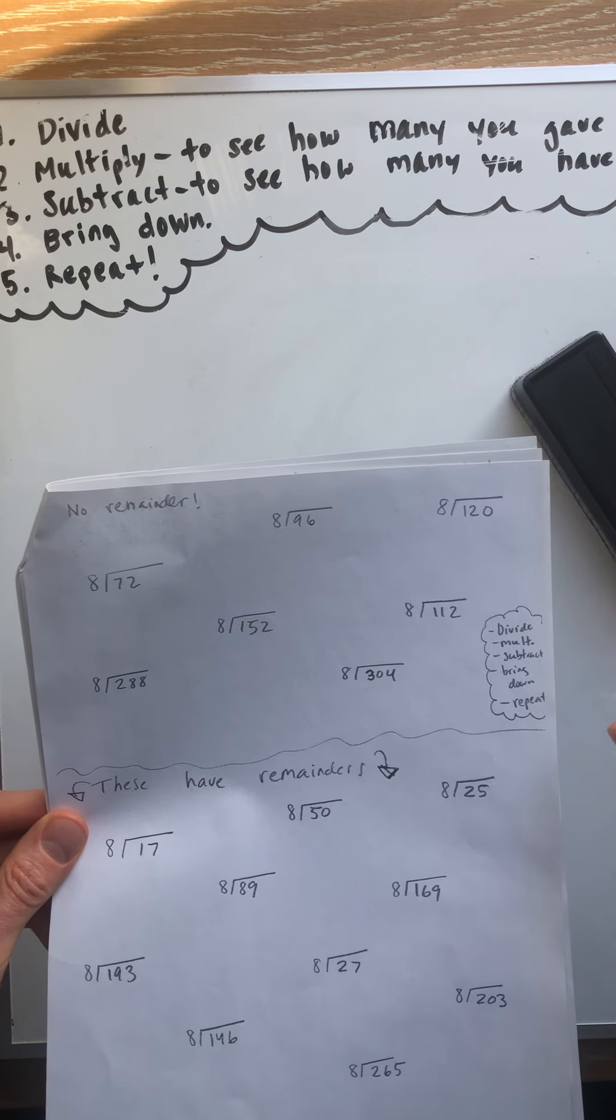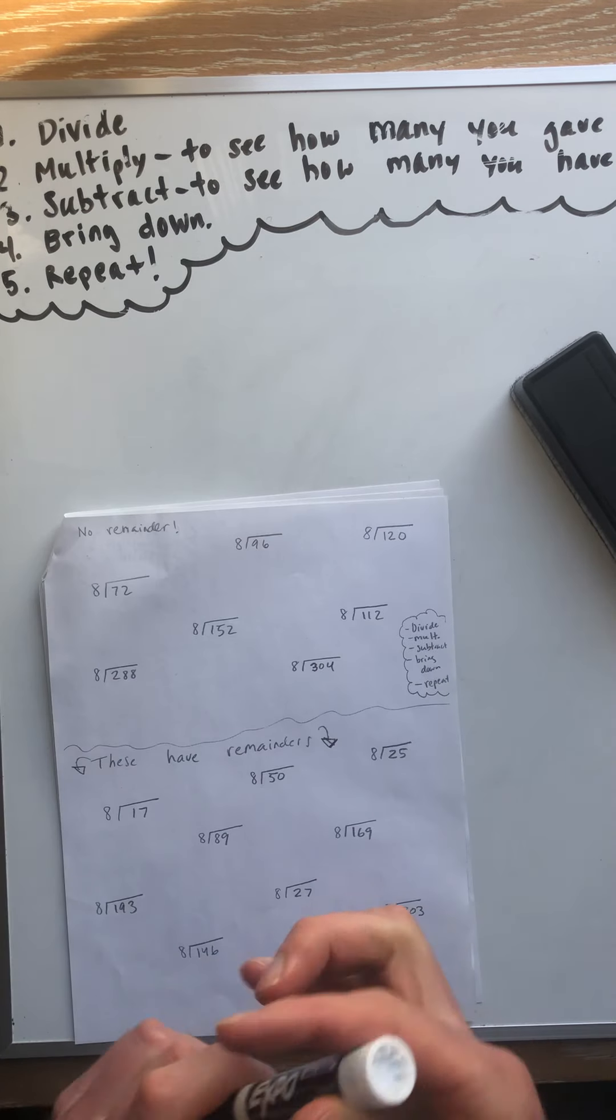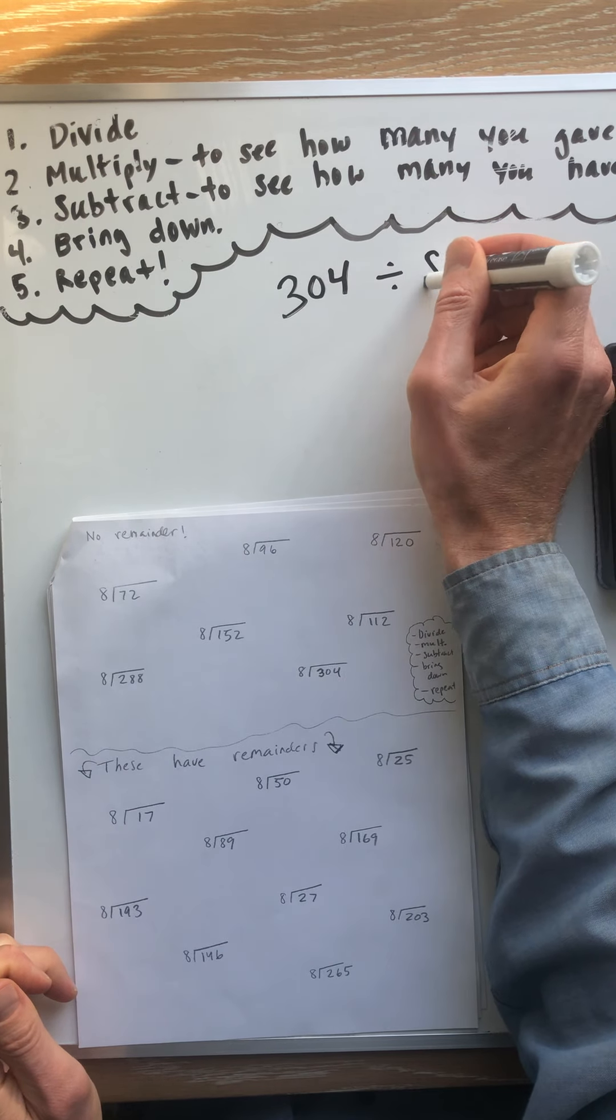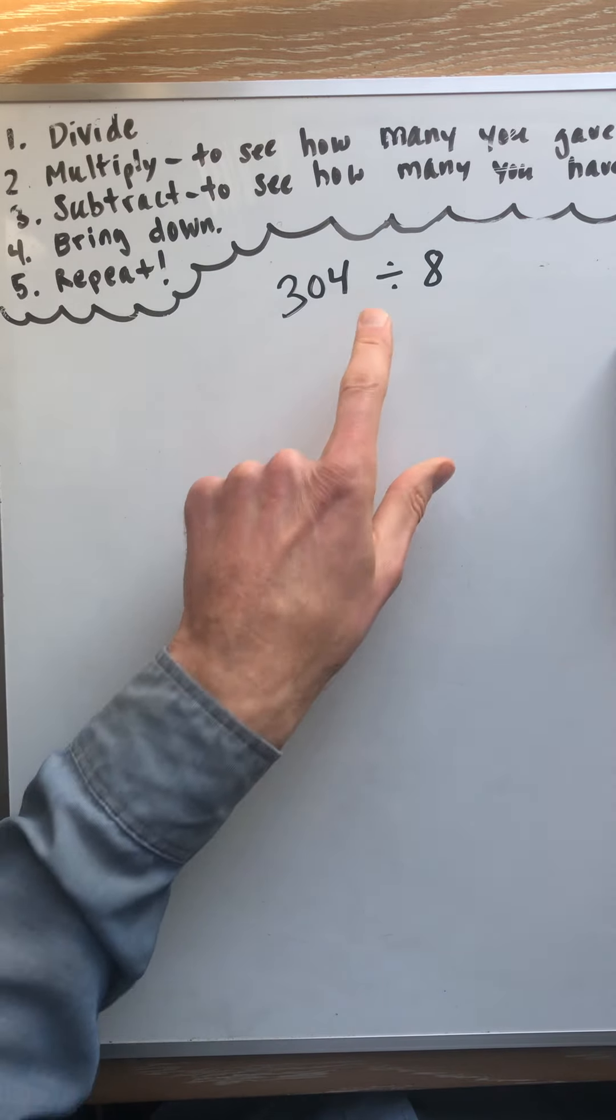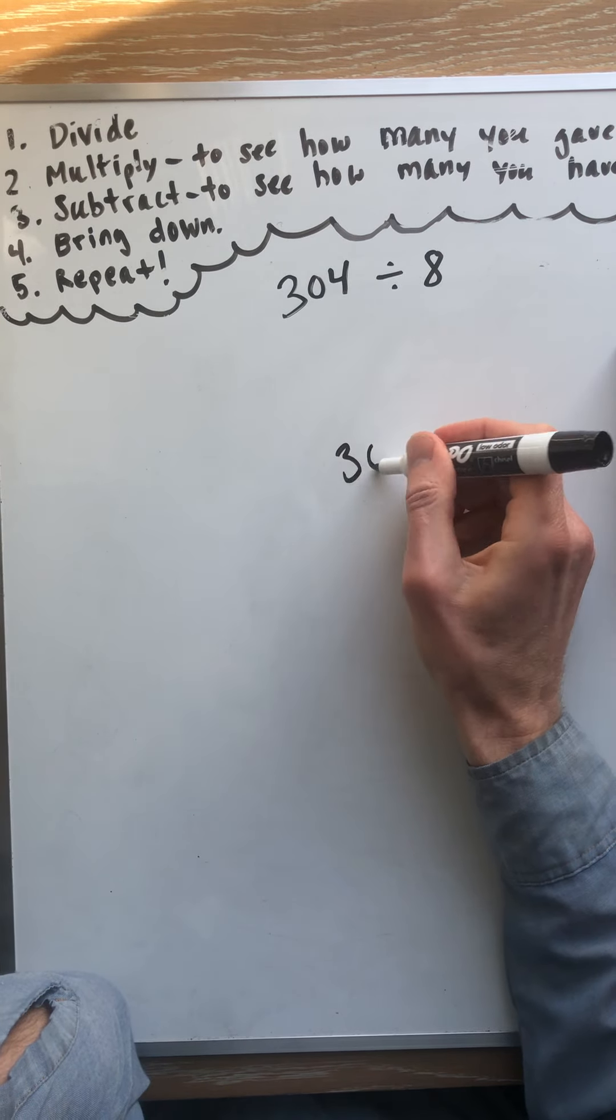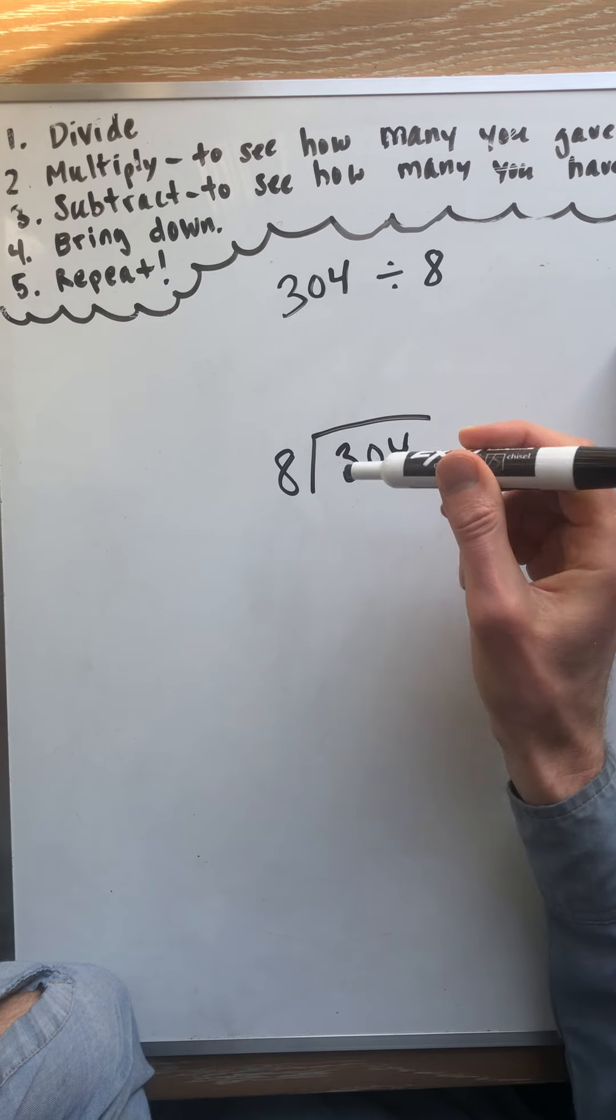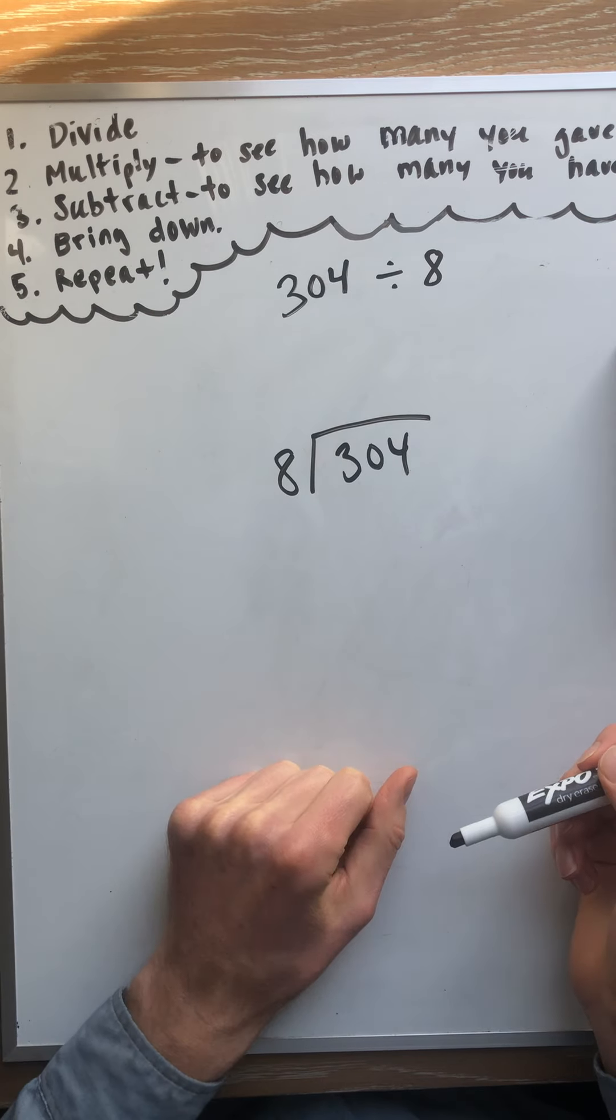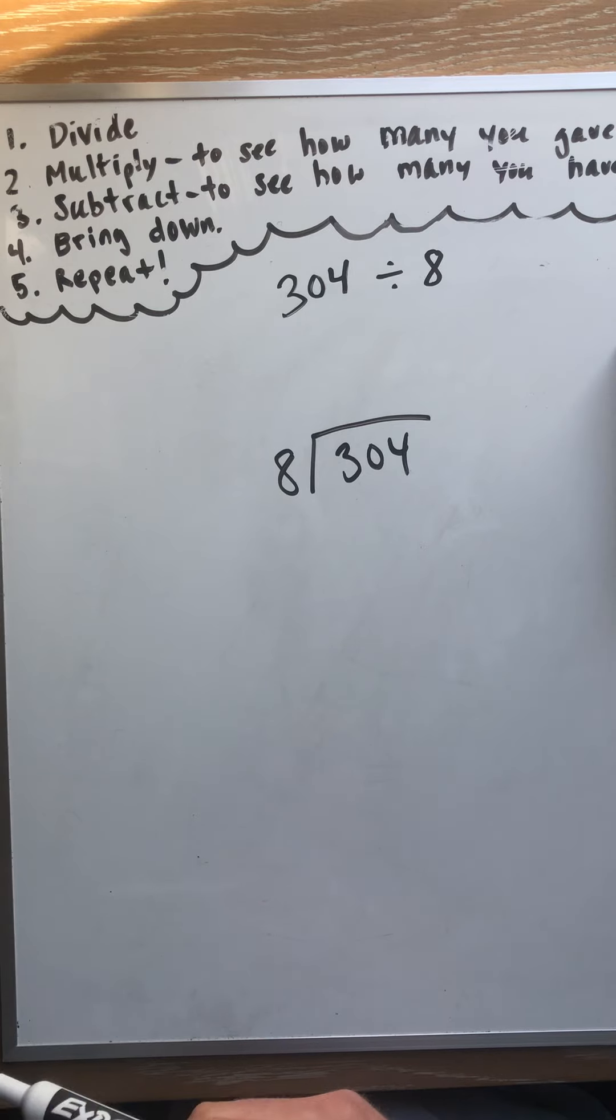So I'll just do one problem for you. I'll do a hard one. I'll do 304 divided by 8. The thought is how many groups of 8 fit into 304? 8 times what equals 304? Anybody have a guess?